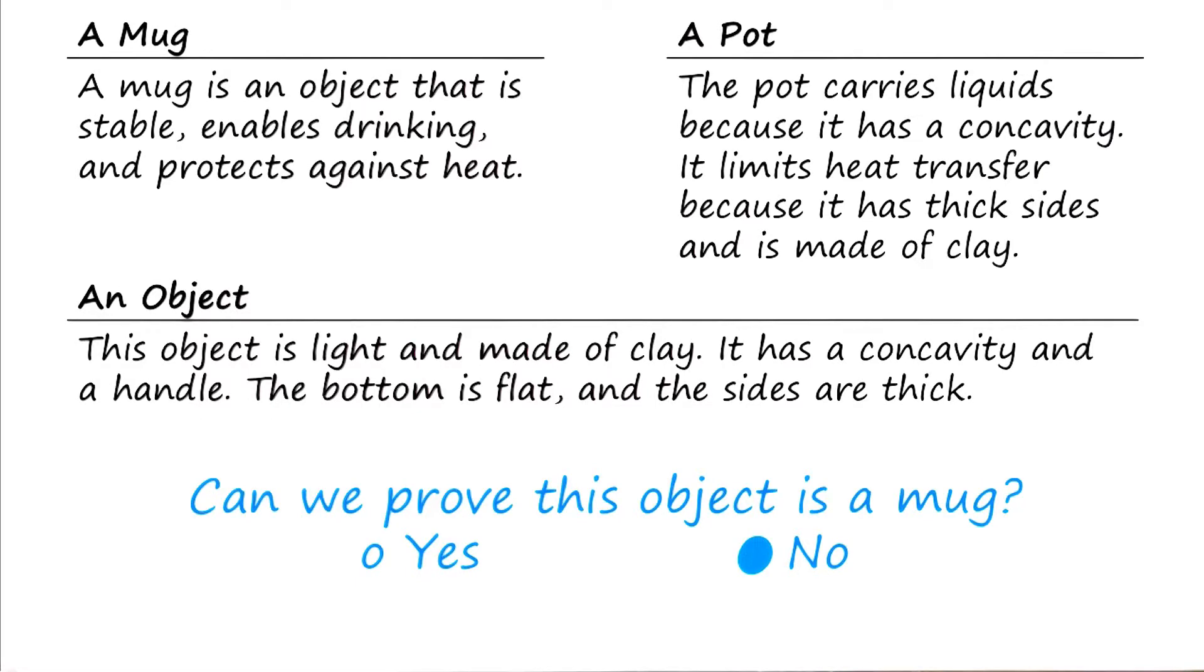What do you think, David? Is this provable? So I said that no, based on the knowledge that we're given here about the mug, a pot, an object, and the things that we know from the past, we can't actually prove that this object is a mug.